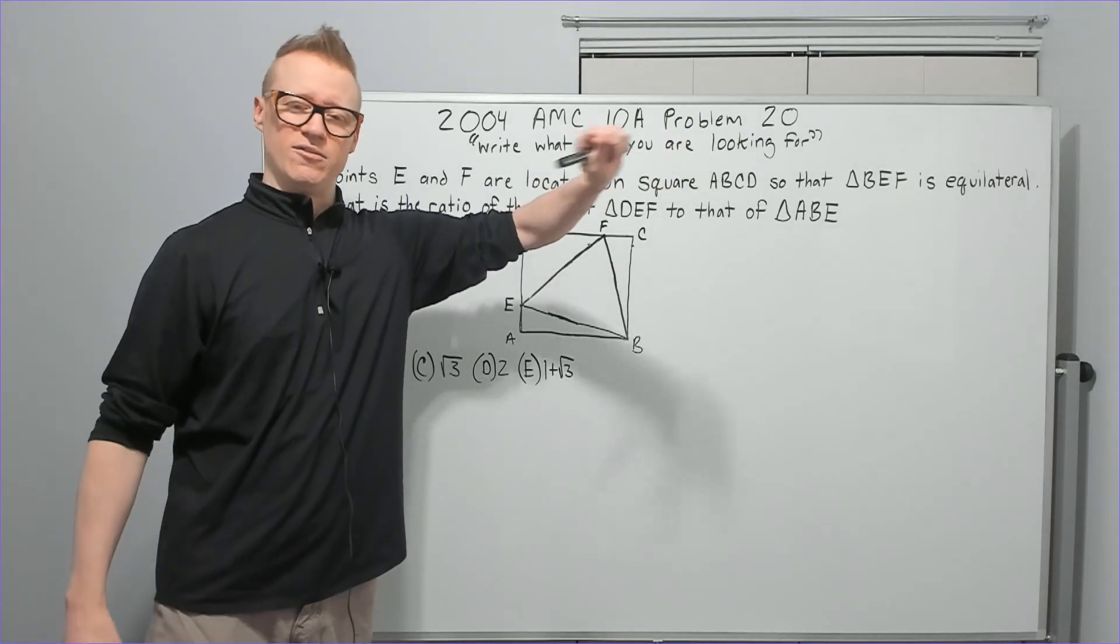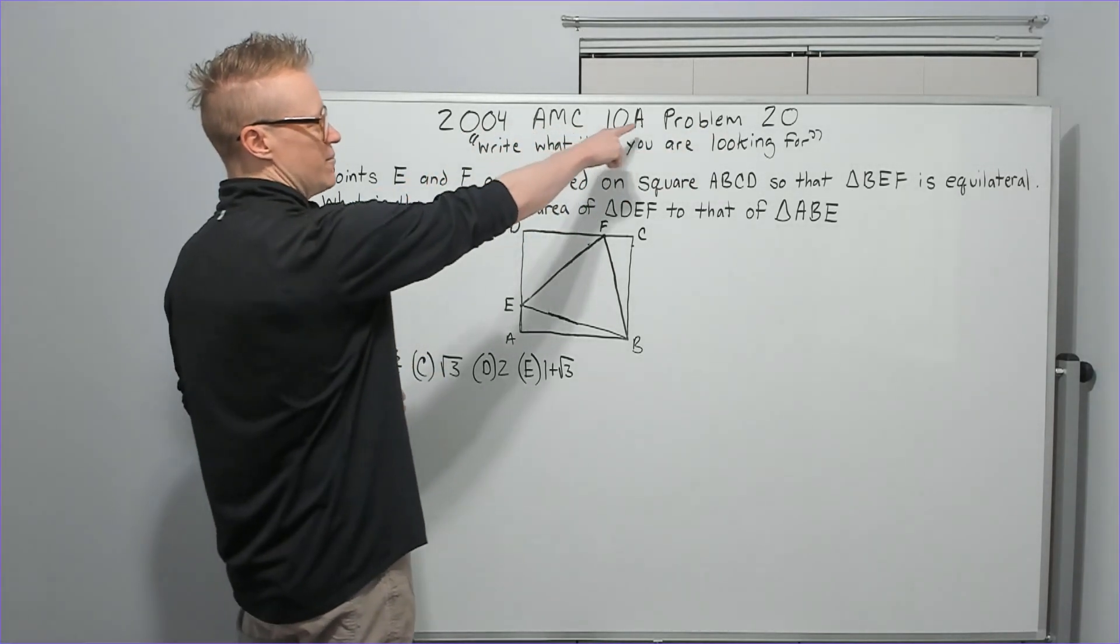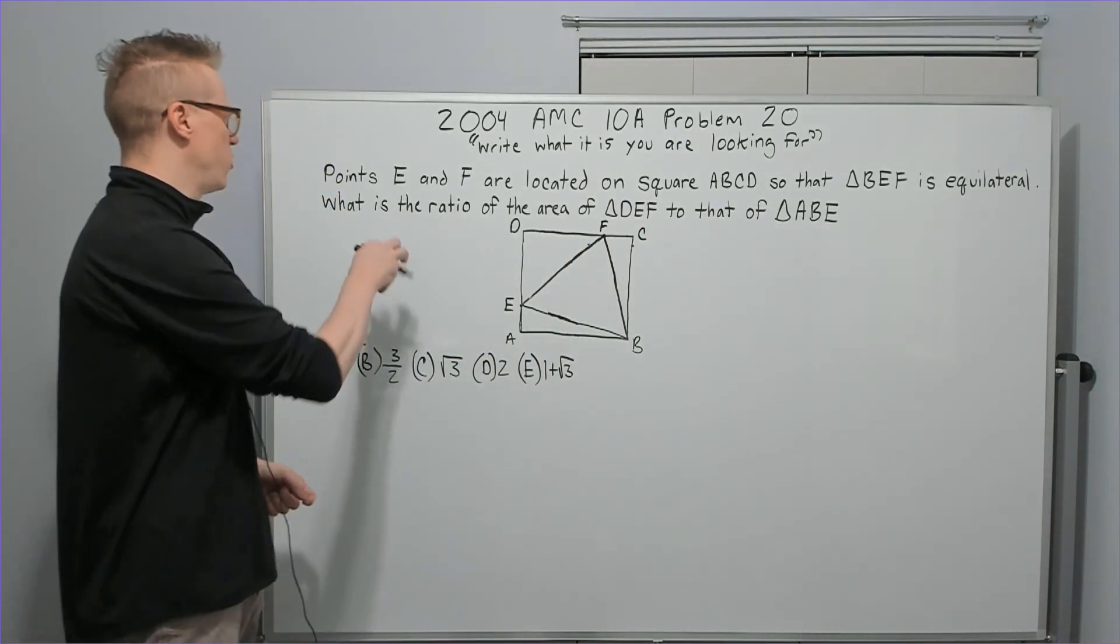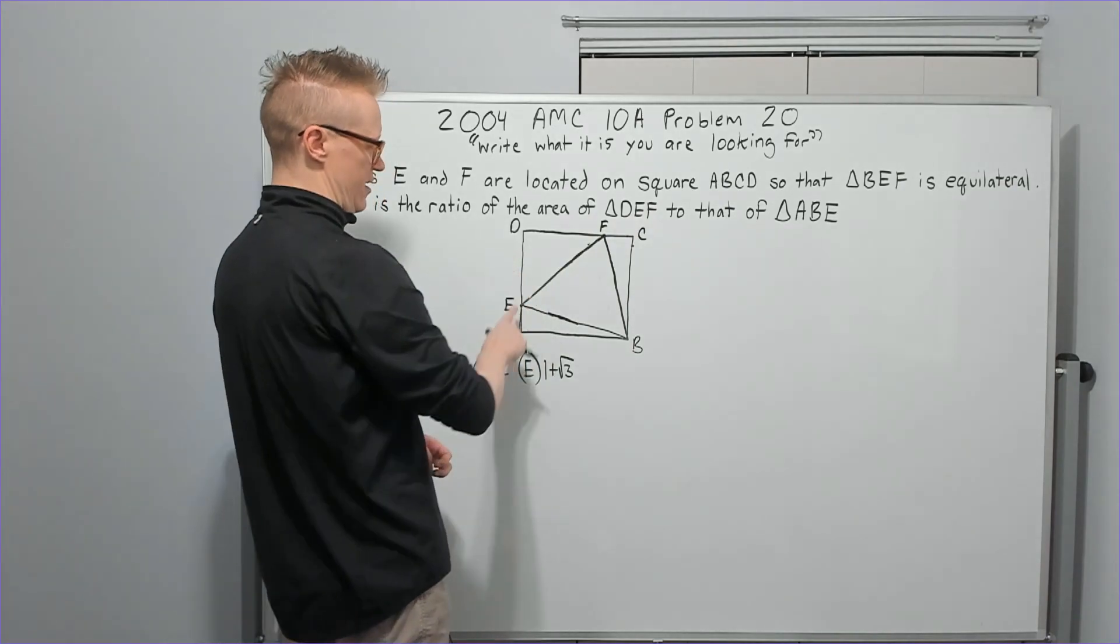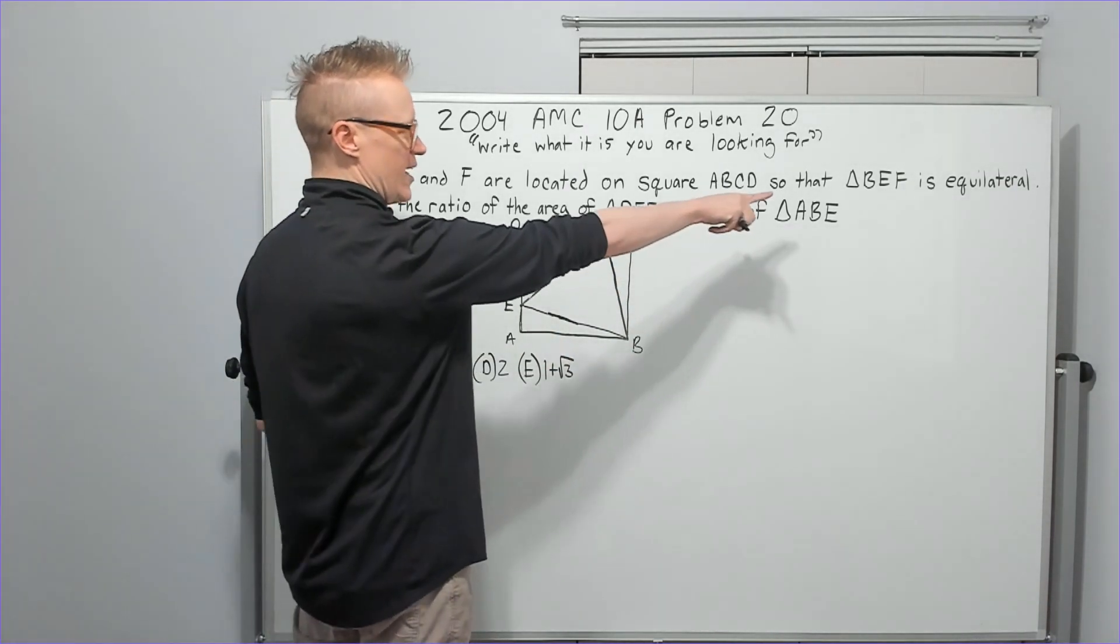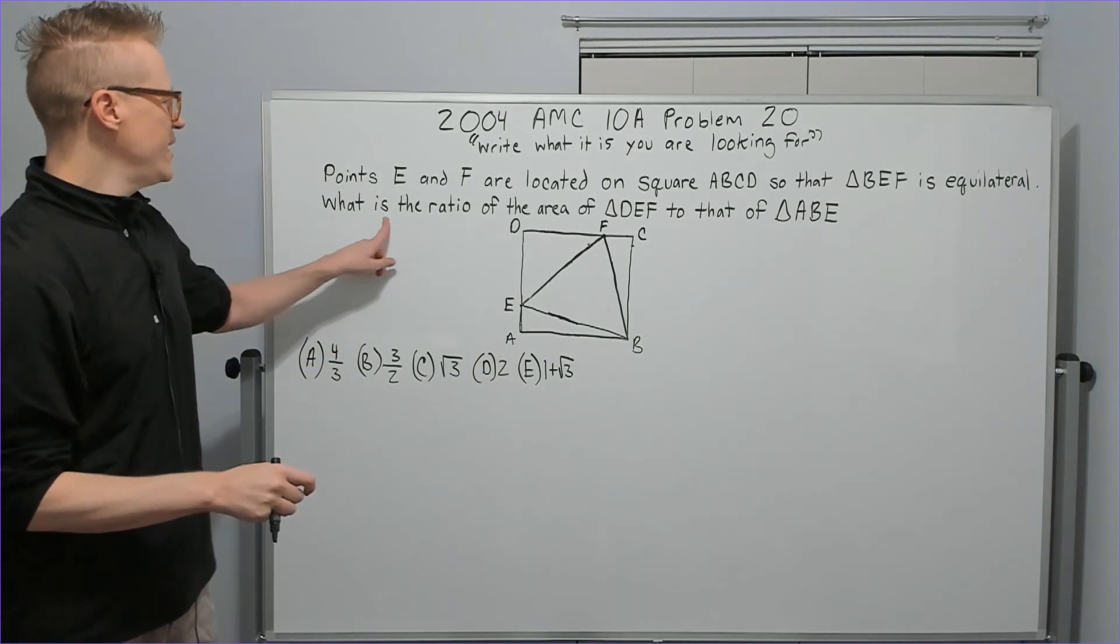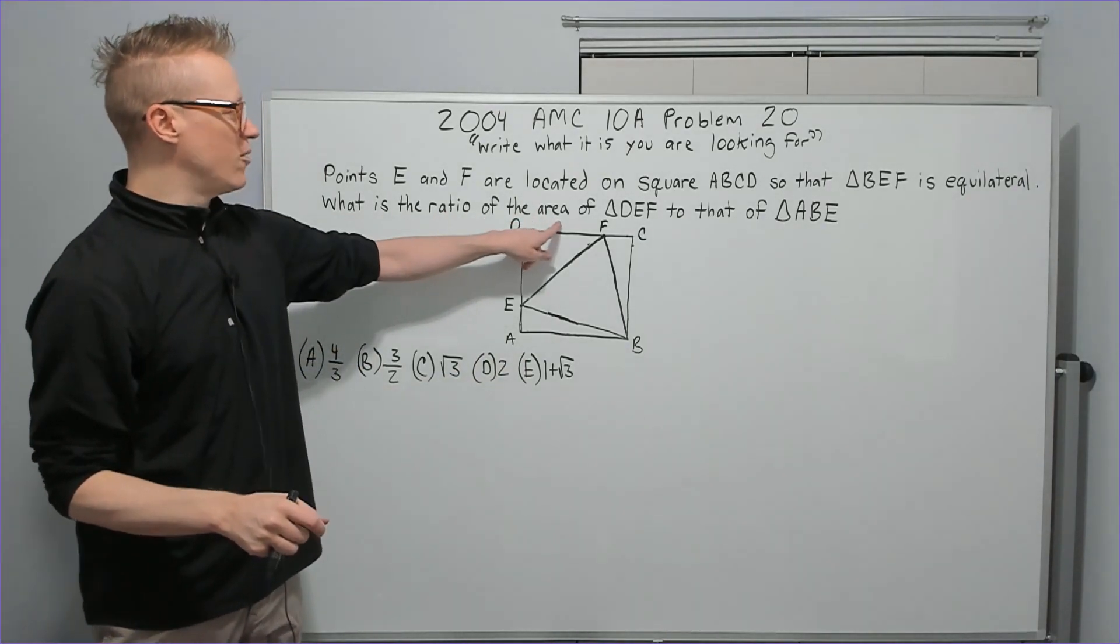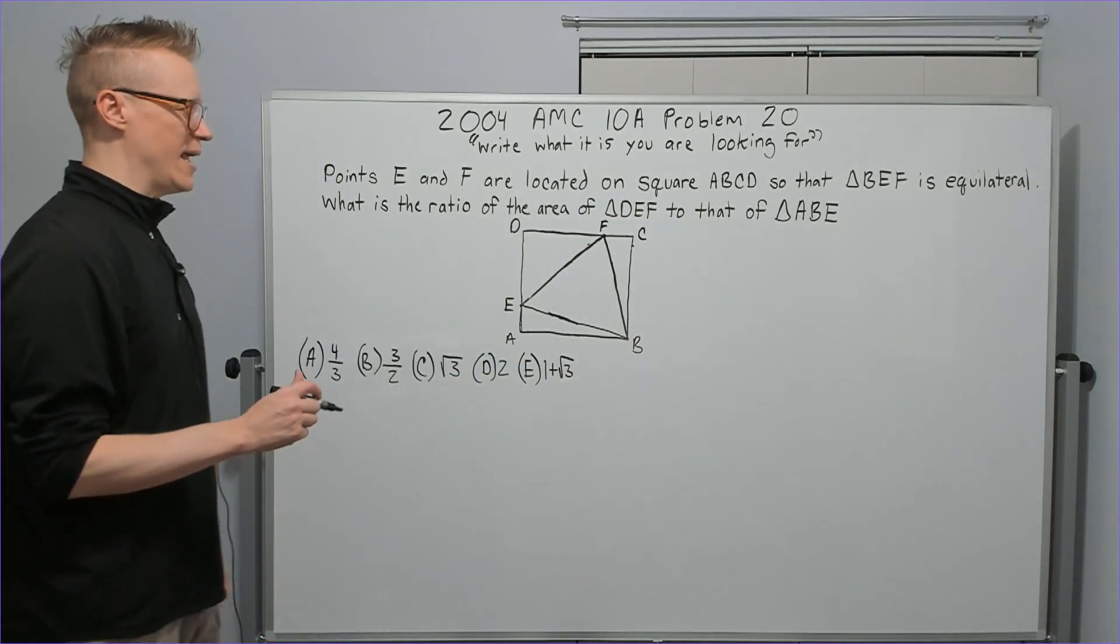So I'm going to explain this one here, write what it is you are looking for. What does it mean? We'll see. 2004 AMC 10A, problem 20. Points E and F are located on square ABCD so that triangle BEF is equilateral. What is the ratio of the area of triangle DEF to that of triangle ABE?